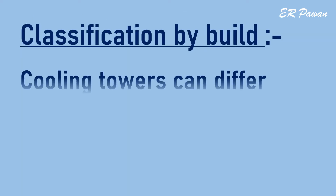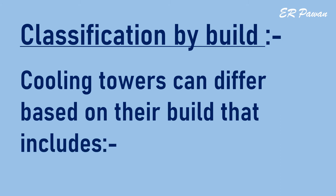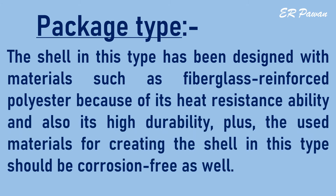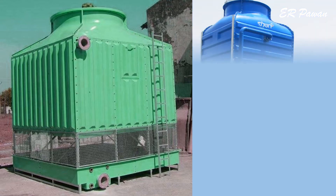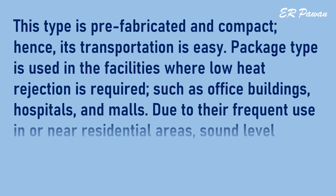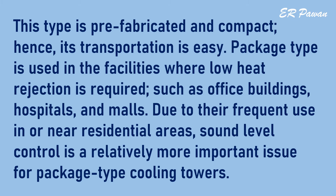Cooling towers can also differ based on their build. Package type: the shell in this type has been designed with materials such as fiberglass reinforced polyester because of its heat resistance and high durability. The materials for creating the shell should also be corrosion free. This type is prefabricated and compact, making transportation easy. Package type is used in facilities where low heat rejection is required, such as office buildings, hospitals, and malls.